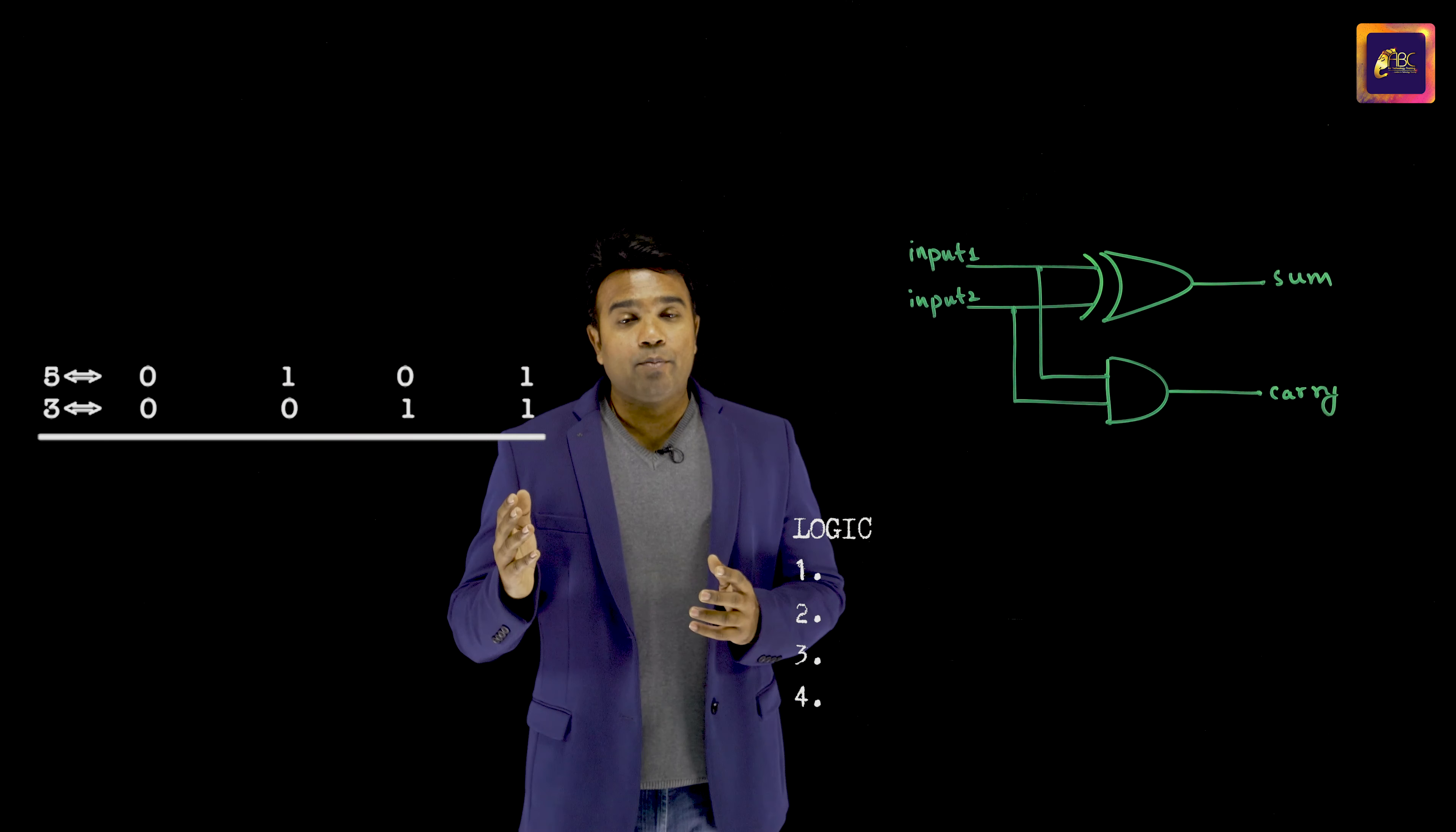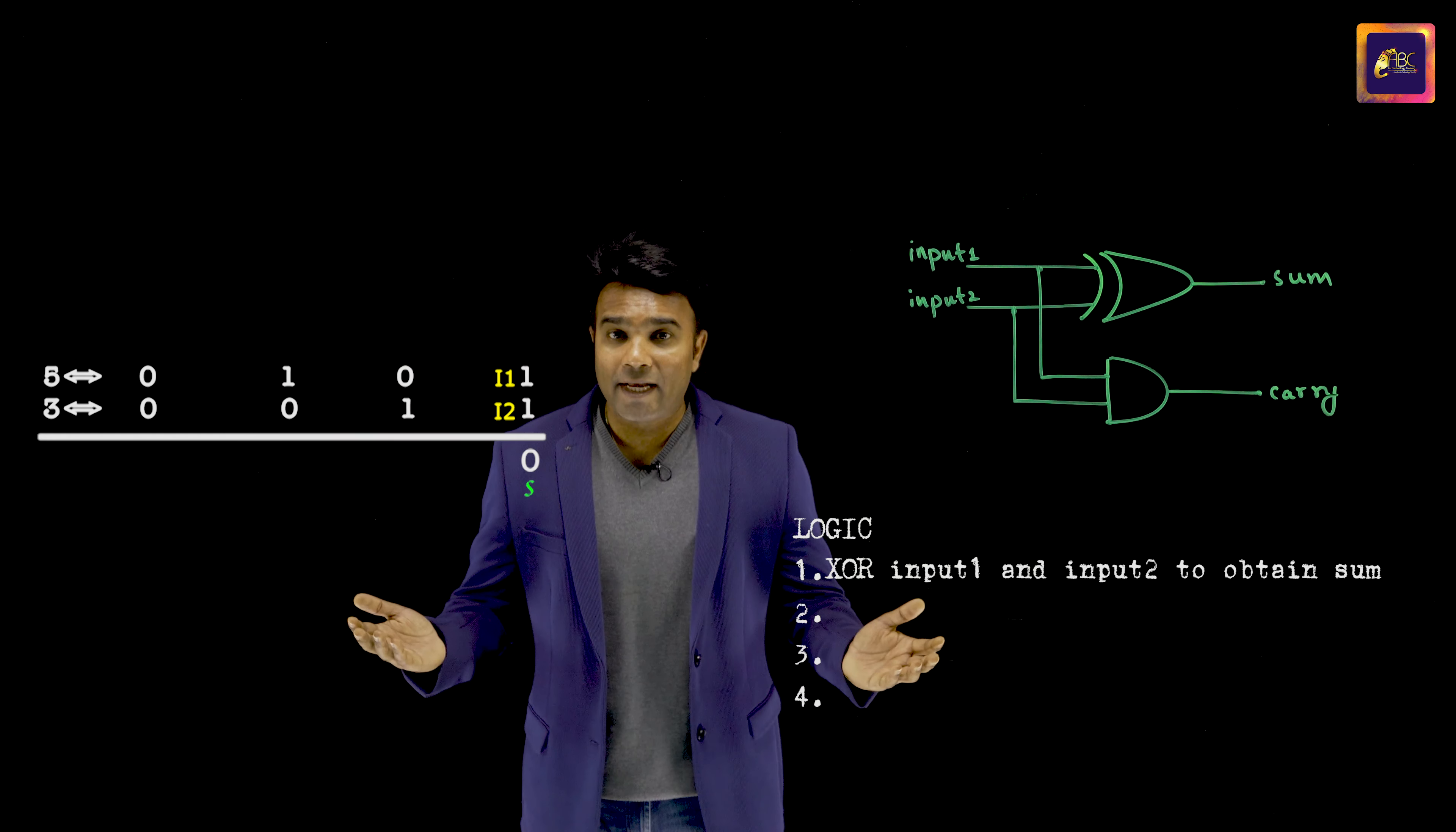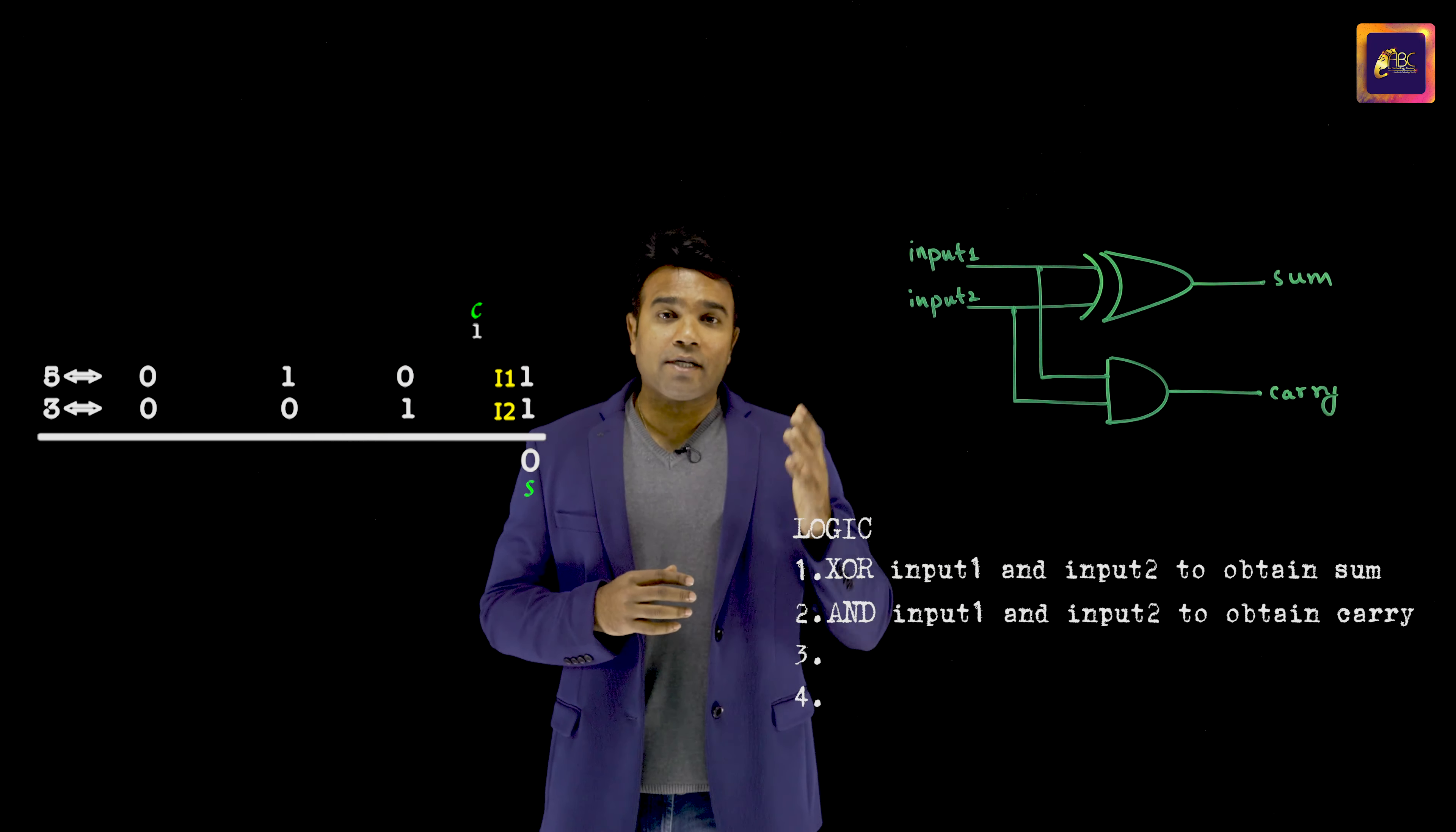which I consider them as my input 1 and input 2. My first step says that I should XOR input 1 and input 2 to obtain the sum. After all, that is what the circuit also says. So I will XOR 1 and 1, and I will get the sum as 0. Hope you recollect yesterday's truth table the way XOR behaves. My second step says that I will have to AND my input 1 and input 2 and obtain the carry. So when I will AND 1 and 1, I am going to get the carry as 1. That is what even the circuit says.